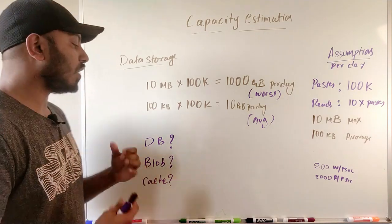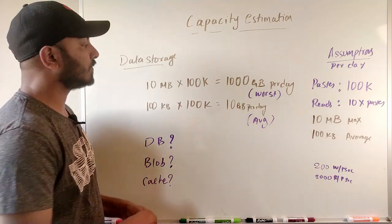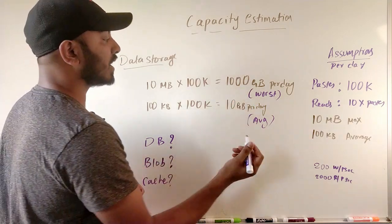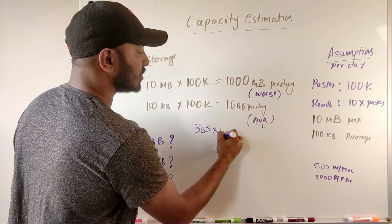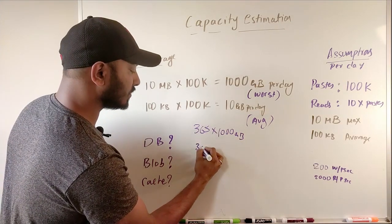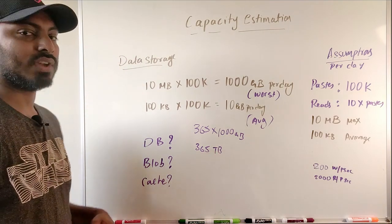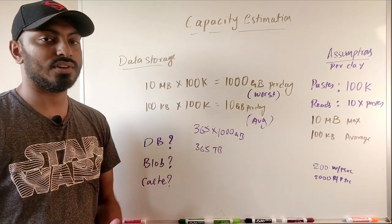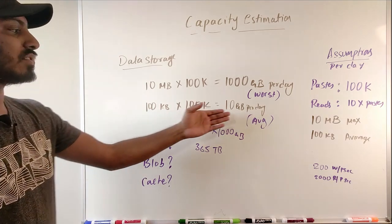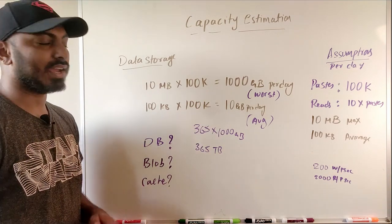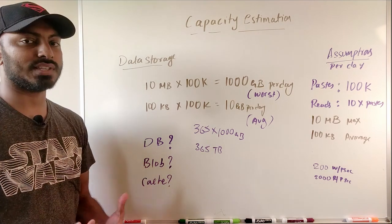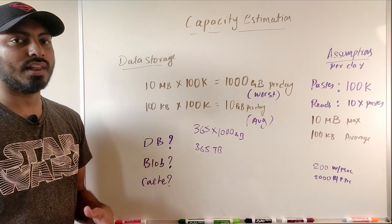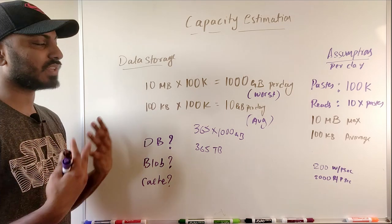These numbers help decide what kind of database to use. In the worst case, 1,000 GB per day means 365 TB per year, and over 10–15 years that's a massive amount. The average case of 10 GB per day is much more manageable. You can use SQL or NoSQL — with NoSQL, a lot of things are automatically taken care of.